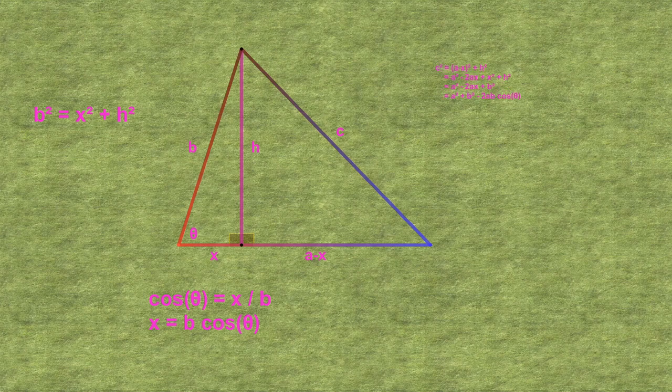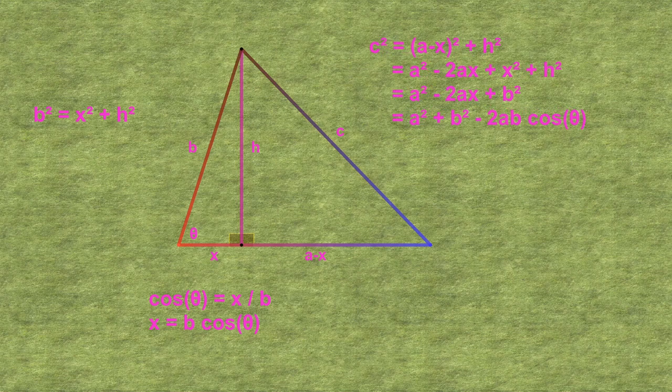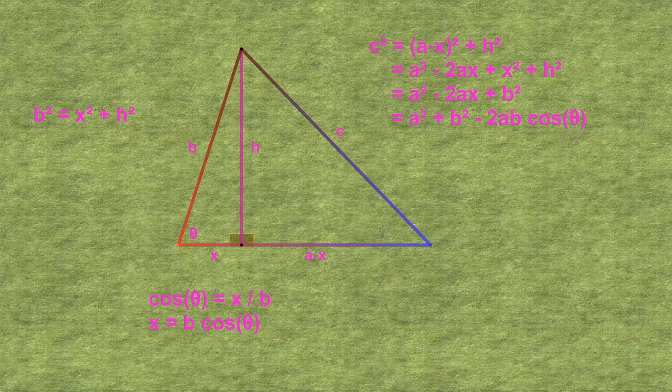We now apply the Pythagorean theorem to the other triangle as well to get c squared equals a minus x squared plus h squared. Note that since we have cut side b out of this triangle, the two smaller problems x and h are now part of the larger problem in the place of the original known value and we need to express them back in terms of the original known length b.